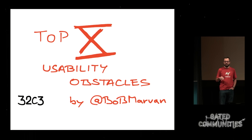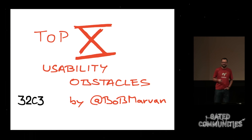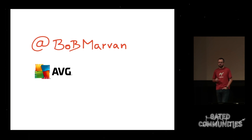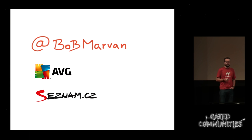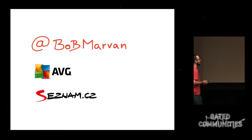Good morning everybody. First I have to say this is the first time I'm here at this congress and I'm pretty much excited. My nickname is Bob Marvin, and as was mentioned I'm a UX designer at AVG.com, the online security company, for the last two years. Before that I used to work at Seznam.cz — I don't know how familiar you are with this company, but it's something like Czech Yahoo and it's still competing with Google in Czech Republic.